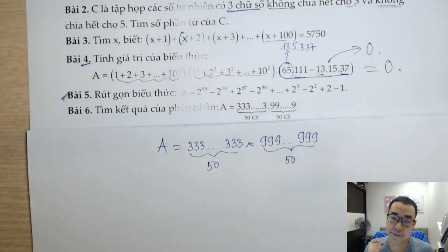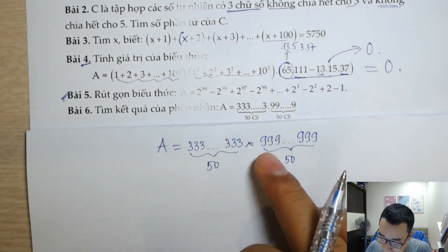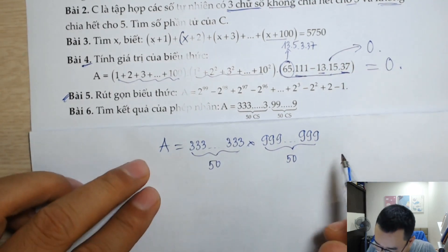Chúng ta để ý này, khi mà thầy nhân với 10, nhân với 100, nhân với 1000, nhân với 10 mũ n, thì là một cái phép nhân rất là đơn giản, đúng không? Do đó nên là bây giờ thầy thấy cái 999...999 này, nó sát với cái 1000...